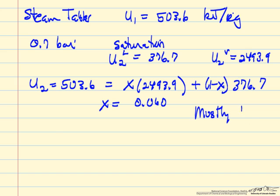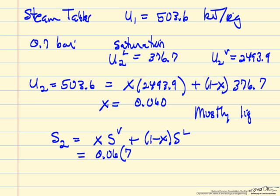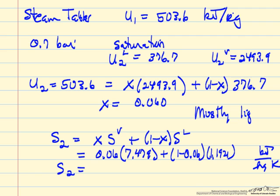So we have mostly liquid. We can find the entropy by the same means that we just did, that x times entropy of the vapor, 1 minus x, entropy of the liquid, and of course now we know x. We can go to the steam tables, look up the vapor entropy, 7.7191 kilojoules per kilogram per degrees Kelvin, 1 minus x, 1 minus 0.06, entropy of the liquid, 1.1921. So S2 is equal to 1.569 kilojoules per kilogram per degrees Kelvin.